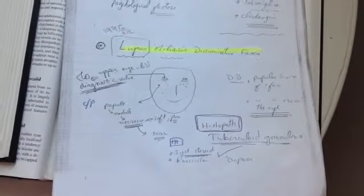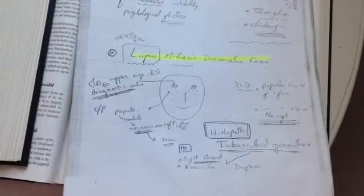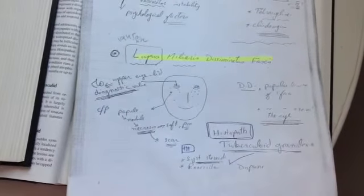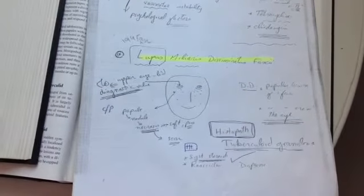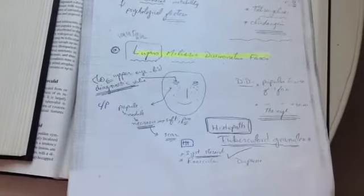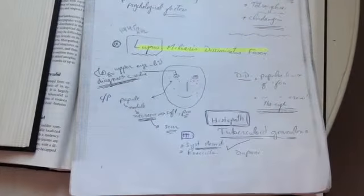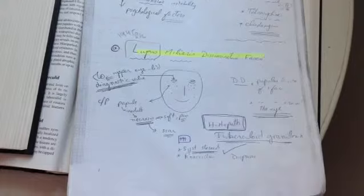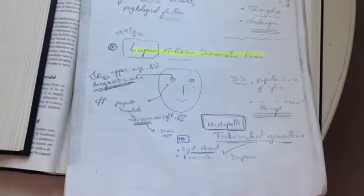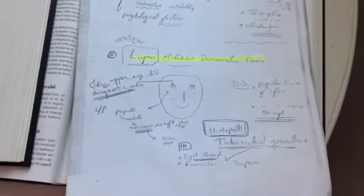The lupus miliaris disseminatus fasciae, it is clinically there is papules that form nodules and necrosis, leading to soft pus formation and scarring. Usually there is upper eyelid papules, we can see it, it is a diagnostic value. And also the differential diagnosis from papular lesions of the face and from papular lesions around the eye.